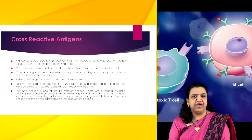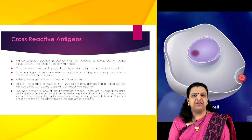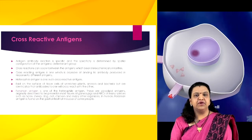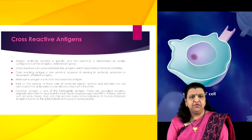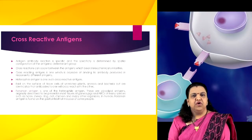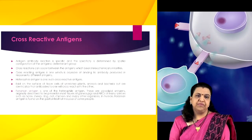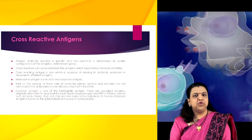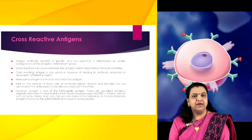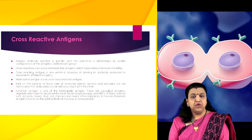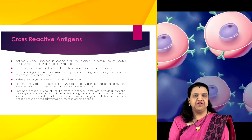Heterophile antigen is one such cross-reactive antigen. These are antigens which exist on the surface of tissue cells of unrelated plants, animals, and bacteria, but are identical such that antibodies to one will cross-react with the other. Very often these heterophile antigens are polysaccharides that are structurally similar due to their limited chemical complexity, even though derived from members of widely separated taxonomic groups. Forssman antigen is one type of heterophile antigen — a glycolipid antigen originally described in the tissues of guinea pigs and RBCs of many species such as horse, sheep, dog, cat, chicken, and many other organisms. In humans, Forssman antigen is found on the gastrointestinal mucosa of some people.